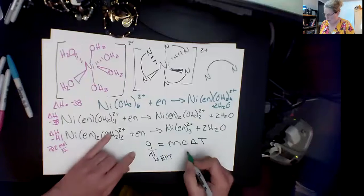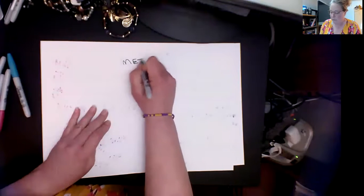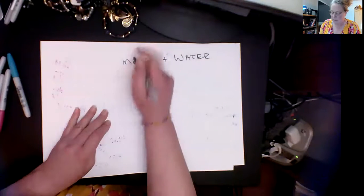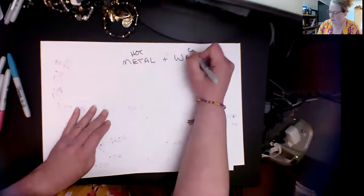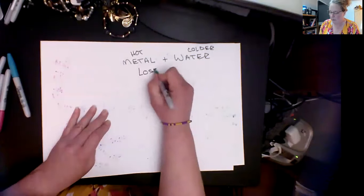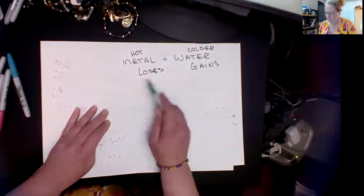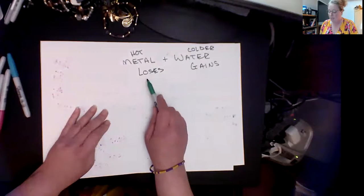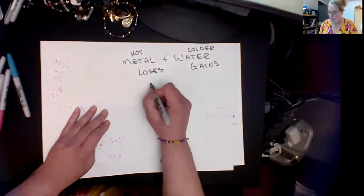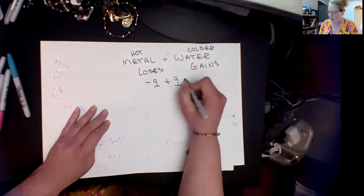If I put it in water and then measured the temperature change of the water, if I have metal added to water, whatever heat this loses if this is the hot thing I'm adding to colder water - whatever this loses this gains. In a closed system, if you do it fast enough it is closely approximated to a closed system. Everything this loses this would be like a losing a Q plus whatever this gains in a closed system, those two things equal zero.